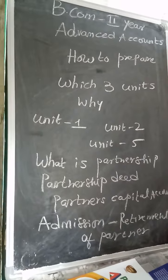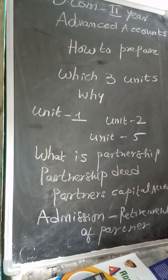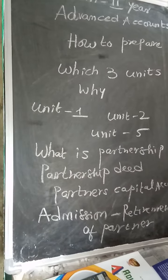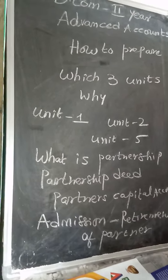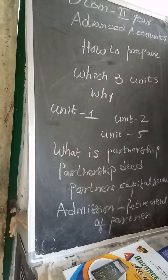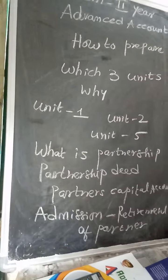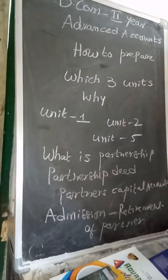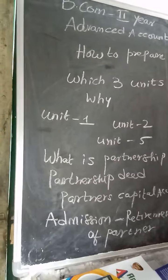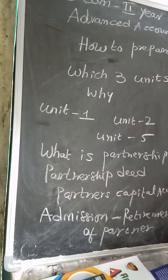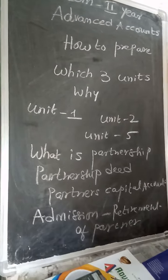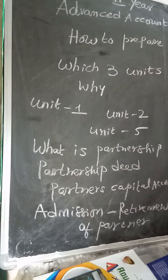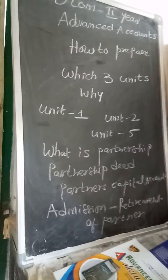Unit 2 covers dissolution, which means the closing or winding up of the business. In case of dissolution or insolvency, we prepare a realization account. The revaluation account is prepared regularly at the time of admission and retirement, whereas the realization account is prepared only once in the life of the firm — only at the time of winding up.